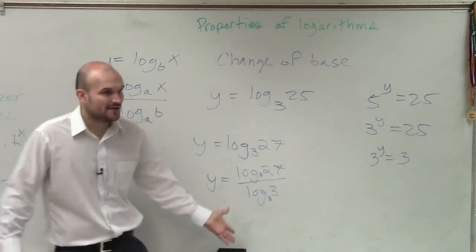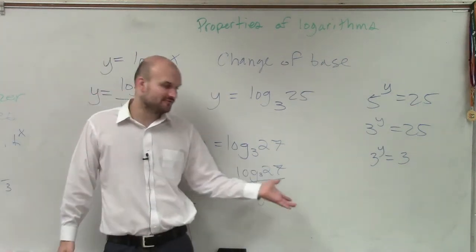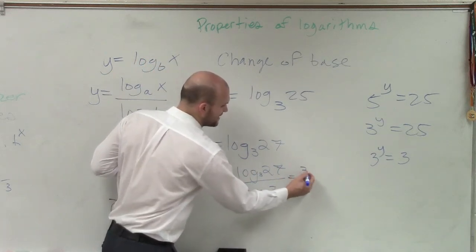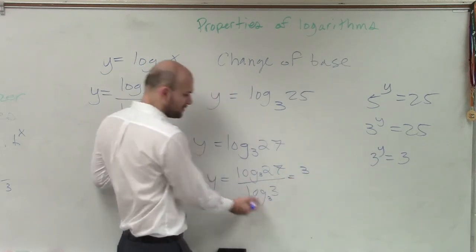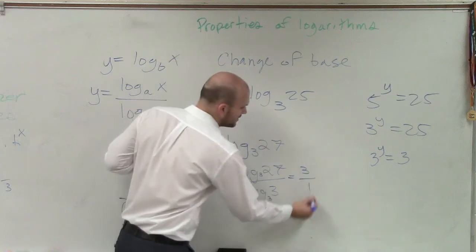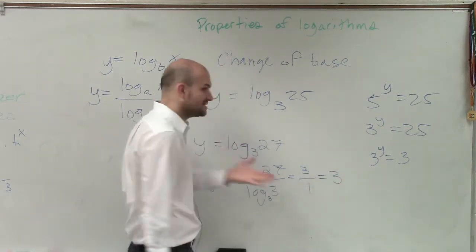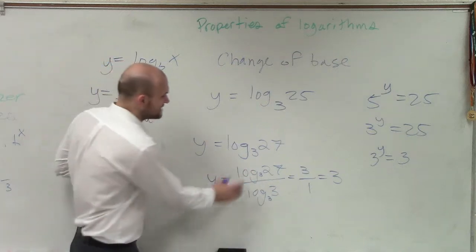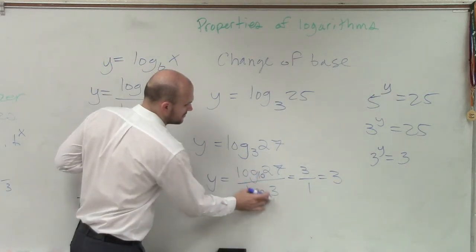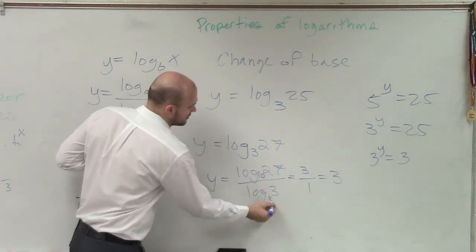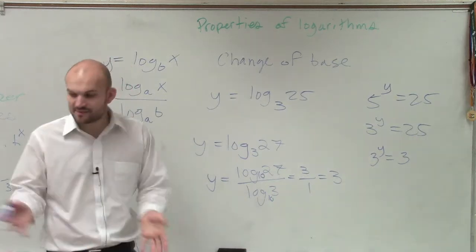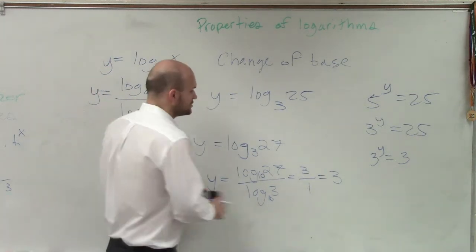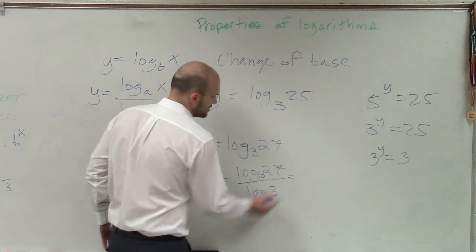Or you can choose base 3 if you know the numbers. 3 raised to what power gives 27 is 3, and 3 raised to what power gives 3 is 1 — so that's 3 over 1 equals 3. You can also just plug it into your calculator using base 10, and the answer is going to be 3.